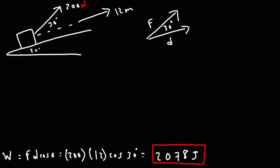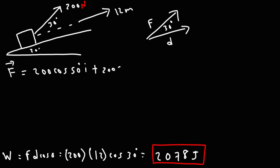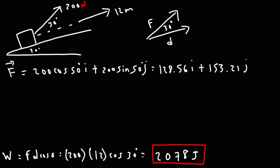Now let's get the same answer using the dot product formula. We put the force vector in component form. The magnitude is 200 and the total angle relative to the x-axis is 50 degrees (20° incline plus 30° above incline). So the force vector is 200 cosine 50 i plus 200 sine 50 j, which equals 128.56i plus 153.21j.